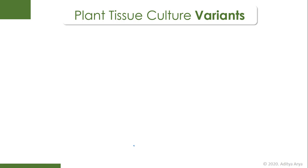In this video we will be discussing about plant tissue culture variants. Plant tissue culture is a technique used for taking a small part of the plant called an explant and growing it in different ways — either into artificial seeds, new plants, for producing secondary metabolites, or for creating haploid plants. There are a variety of methods and divergent techniques present in plant tissue culture.